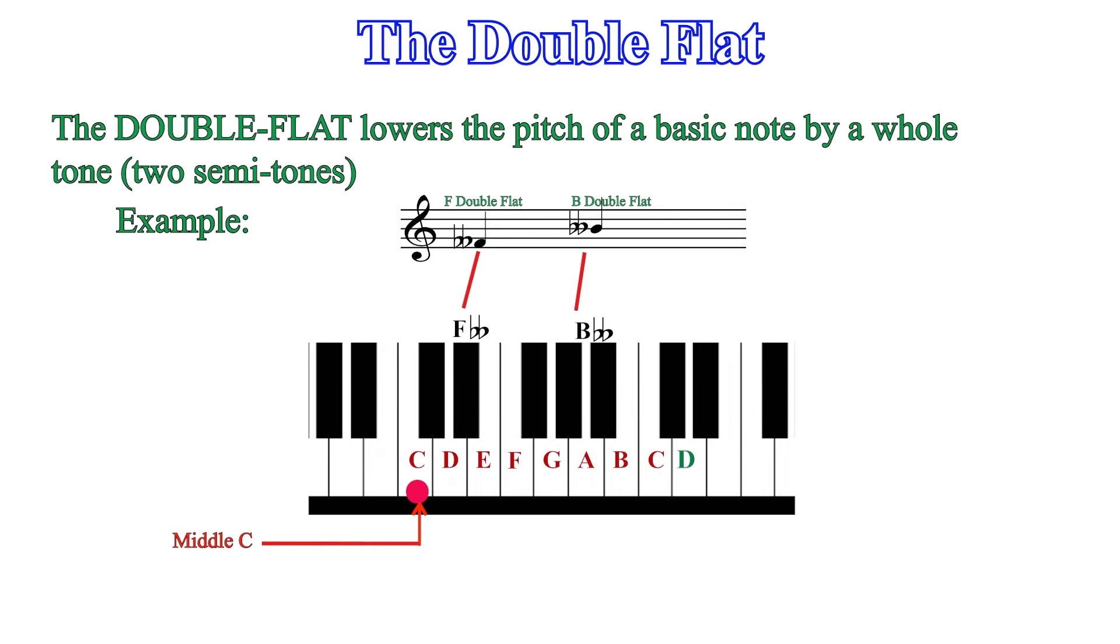The double sharp and double flat do not commonly occur in music because they can be notated as another note. For example, we can notate as A rather than B double flat.